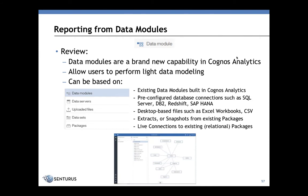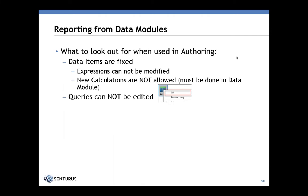For example, you have an existing relational package that contains your actuals, and you have an Excel file that contains your forecast. By creating a data module, you can bring those two together and then build a report from it. Once a data module has been created, the data items are fixed. Any changes need to be done prior to using it for reporting.